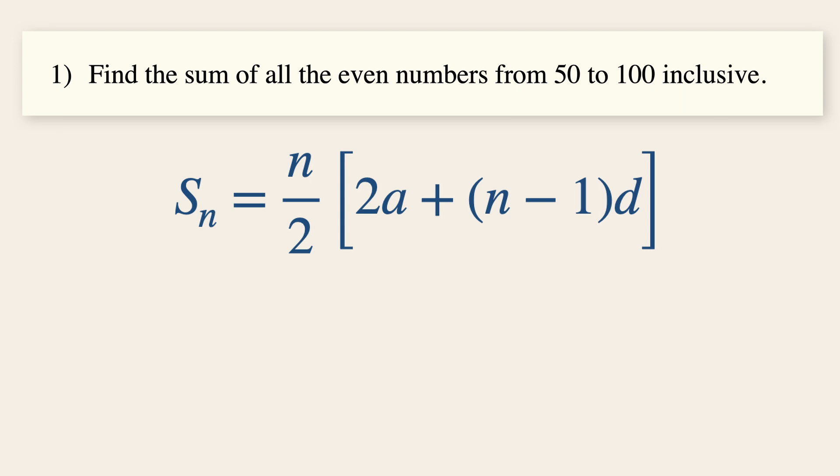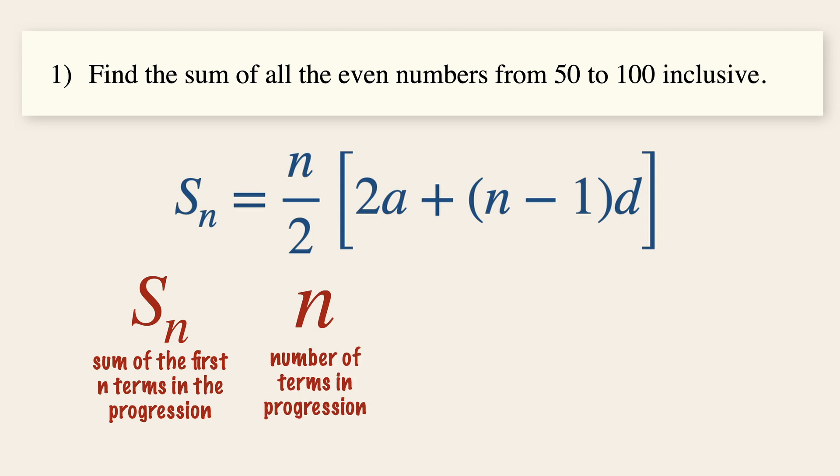If you are new to this formula, this represents the sum of the first n terms, while n represents the number of terms in the arithmetic progression that we are looking at. Also, a represents the first term of the progression, while d is the common difference between each term in the progression.